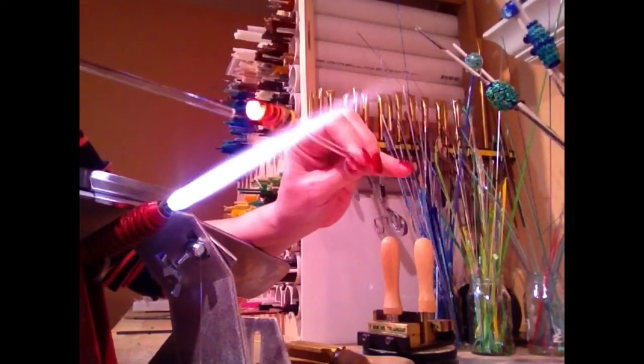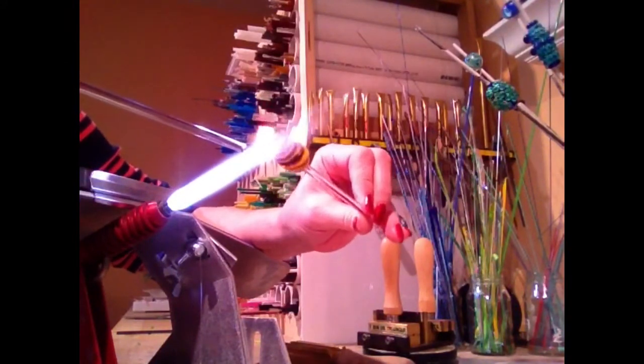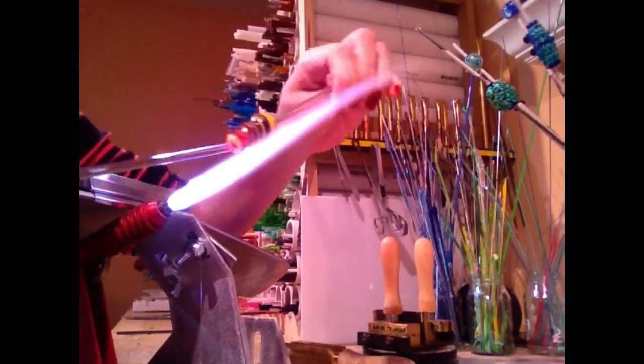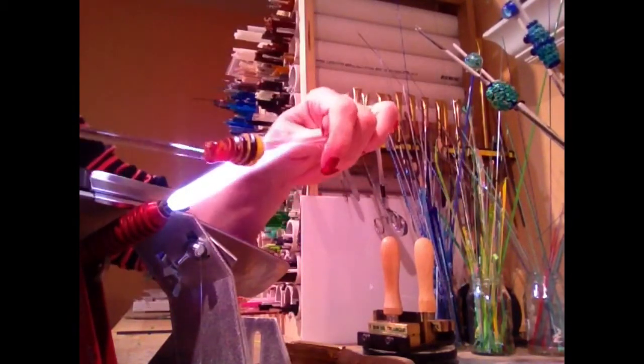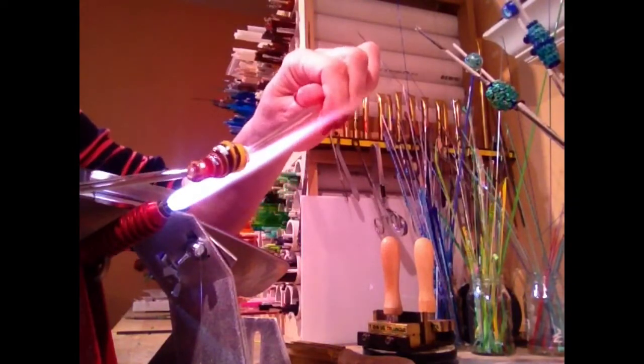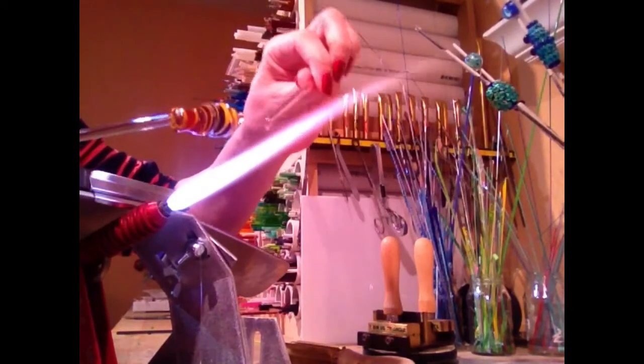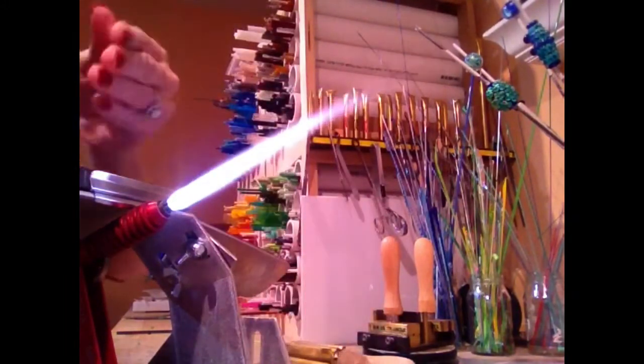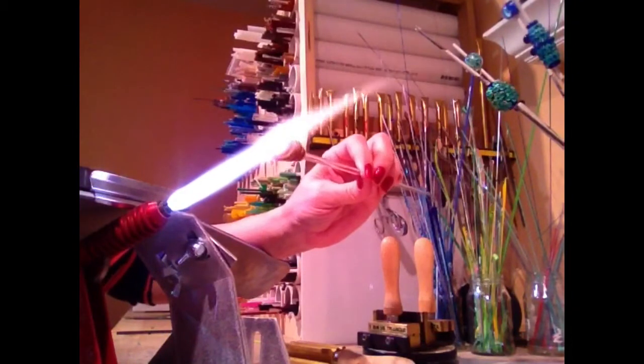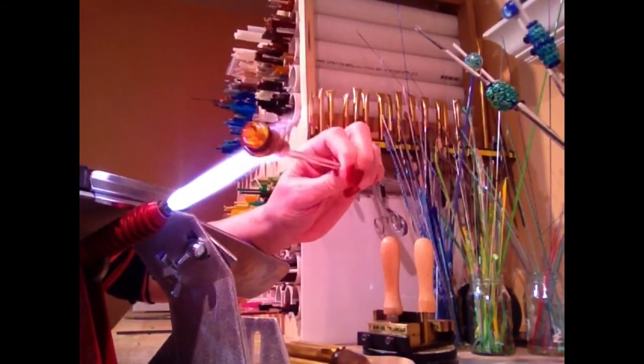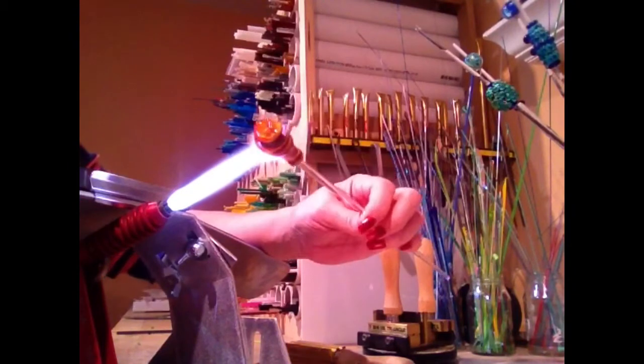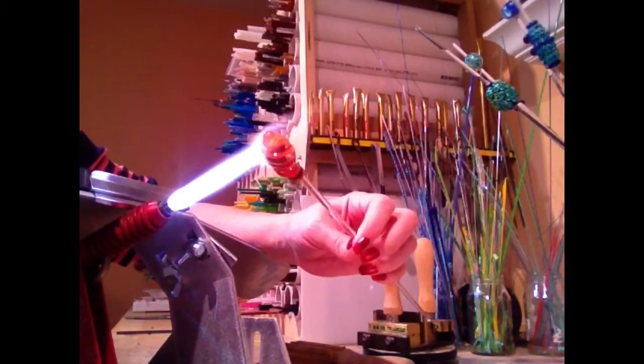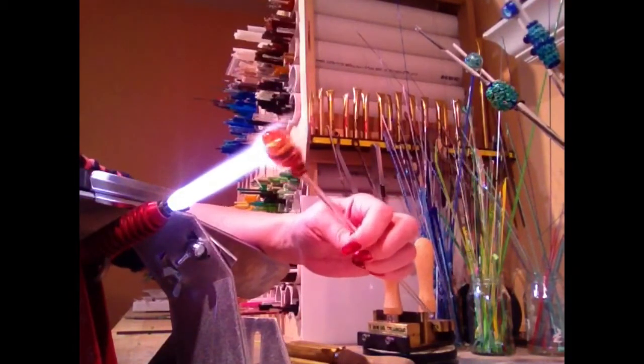So now I'm taking another clear rod and I'm going to attach that on there. So to make the heart, two shoulders and the heart, I need to take this piece off. We're getting to the fun part though, where you actually get to see that it's a heart. Alright, it's starting to get into a nice round shape. Rounded shape, I should say.